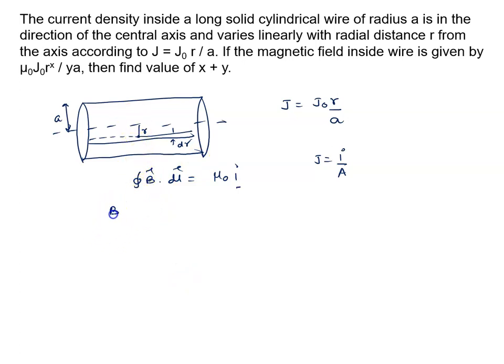At r distance, B dot dl value is B into 2πr. I hope it is visible to everybody. At this distance a circle will form. Circumference will be 2πr.